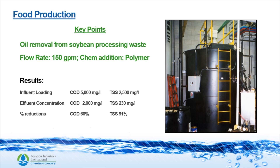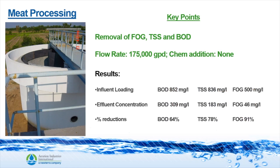This yielded a COD removal rate of 60% and a TSS removal rate of 91%. Here is a meat processing plant where they were removing FOG, TSS, and BOD. It was a 175 gallons per day plant and they added no chemicals. The influent BOD was 852 mg/L, TSS was 836 mg/L, and FOG was 500 mg/L. The effluent concentrations were 309 mg/L BOD, 183 mg/L TSS, and 46 mg/L FOG — yielding 64% removal of BOD, 78% removal of TSS, and 91% removal of FOG.